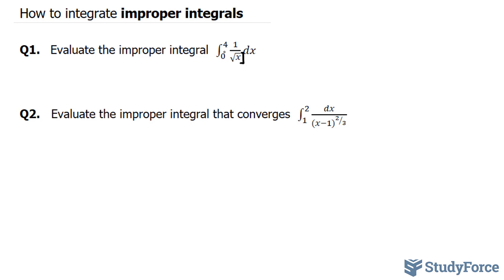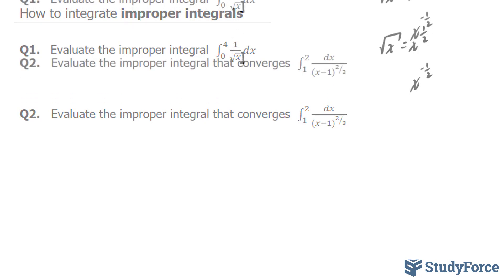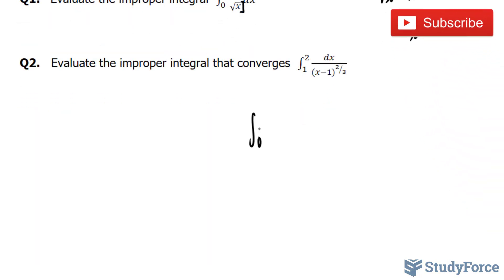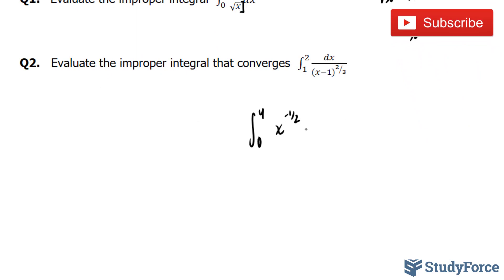So let's start by taking the integral of this function but not evaluating it at zero and four yet. The integral of one over the square root of x — I'll first change the square root of x into x to the power of one over two, then switch this into x to the power of negative one over two, which means the exact same thing as one over the square root of x. So I have to integrate x to the power of negative one over two dx between zero and four.